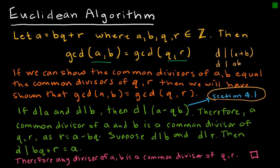So therefore, a common divisor of A and B is a common divisor of Q and R, because we're saying D goes into this, which means R is obviously A minus BQ.